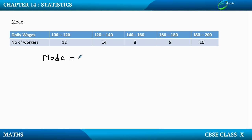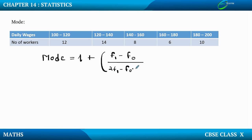MODE is given by: L plus (F1 minus F0) upon (2F1 minus F0 minus F2), multiplied by H. So this is the formula for MODE: L plus (F1 minus F0) upon (2F1 minus F0 minus F2) into H.